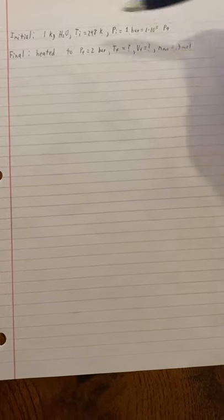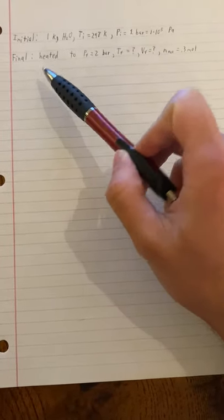The initial temperature is 298 Kelvin. The initial pressure is one bar, which is equal to one times ten to the fifth pascals, and we know the following for the final values.